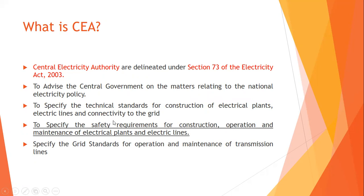CEA specifies standards for electricity lines and connectivity to the grid — from installation, supply, testing, and commissioning — covering all required material standards and parameters. These are published in the form of standards and regulations. Another key role is to specify safety requirements for construction, operation, and maintenance of electrical plants and electrical lines.